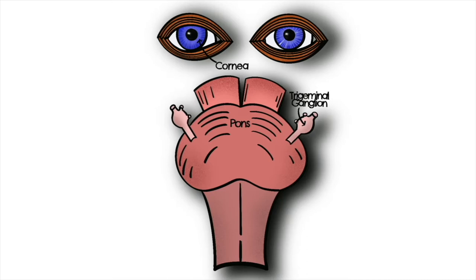This is a diagram of the corneal reflex. The reflex starts when the foreign object comes into contact with the eye and activates either free nerve endings or mechanoreceptors of the cornea.